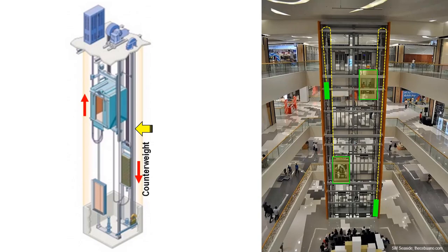The purpose of the counterweight is to save on electricity consumption. The energy required to move the people in the cabin up and down is just the force needed to pull the total weight of the people inside the cabin. People do not see this counterweight in buildings because they are hidden, but in some malls the cabin and the counterweight are shown to fascinate shoppers, as shown in this mall elevator in Cebu.